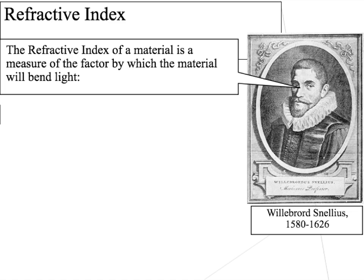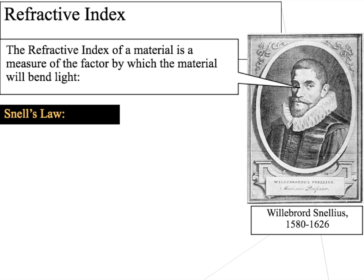In order to examine the relationship between refraction and reflection we need to look at the refractive index. The refractive index of a material is a measure of the factor by which the material will bend light. Different materials bend light in different ways due to their densities — glass will have a higher refractive index than air, as will water. Most of the work on refractive indexes was done by Willibrod Snellius in the late 16th to early 17th century, and he devised Snell's Law.